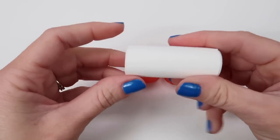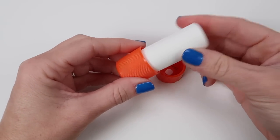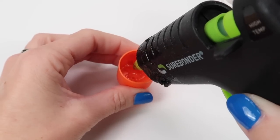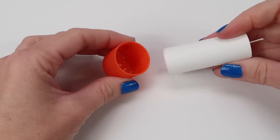The paper tube that you've already created should be thick enough that it fits snugly into the glue stick cap. Add a little bit of hot glue to hold it firmly in place.